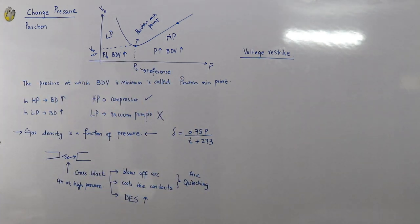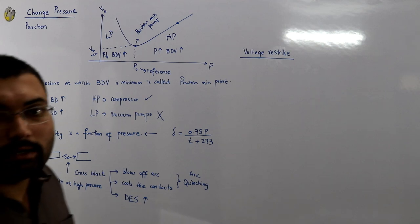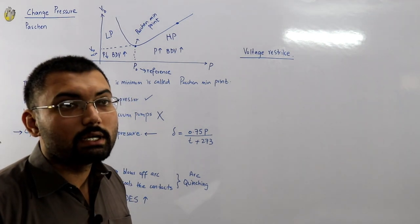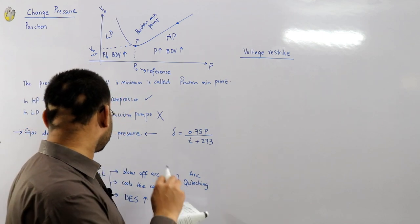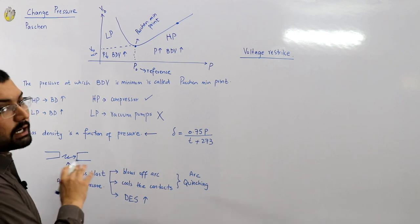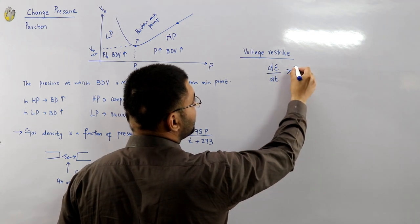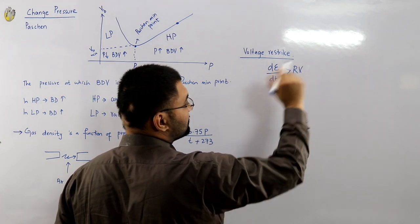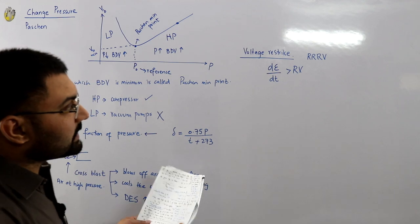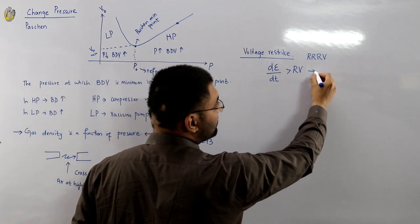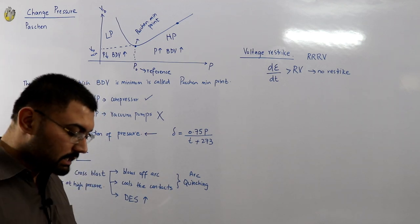For the voltage restrike, you have to provide the air until the contacts are open. When there is a fault and the contacts are open, you have to continuously admit air. The dielectric strength increases when you put in pressurized air, and the rate at which the dielectric strength increases should be greater than the rate of rise of the recovery voltage — written as RRRV. If the rate of dielectric strength increase is greater, then you have no restrike.